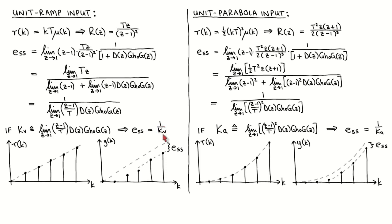We can visualize the scenario as follows: the unit ramp input is shown, and a hypothetical output is also shown. If the output tends to a constant velocity, then the steady-state error is given by the difference between the two.